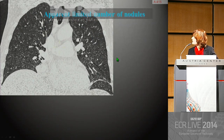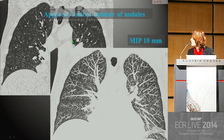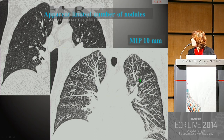Faced with an apparently limited number of nodules, there is a great added value of maximum intensity projection. You can see here the widespread distribution of these micronodules with random distribution, characteristic of hematogenous dissemination in miliary disease.